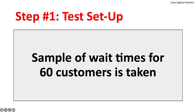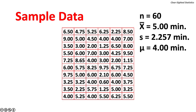Test setup: a sample of wait times for 60 customers is taken. There are 60 observations. The sample mean is 5 minutes, the sample standard deviation is 2.257 minutes, and the presumed population mean is 4 minutes.